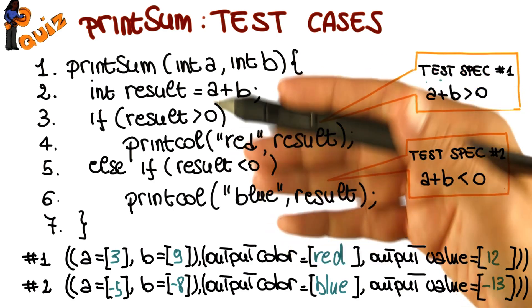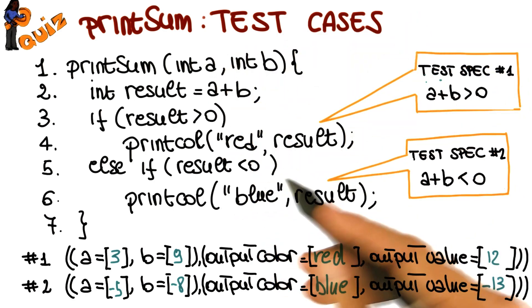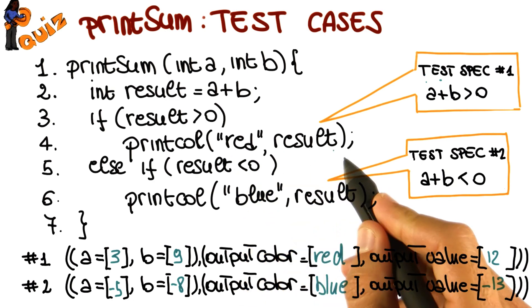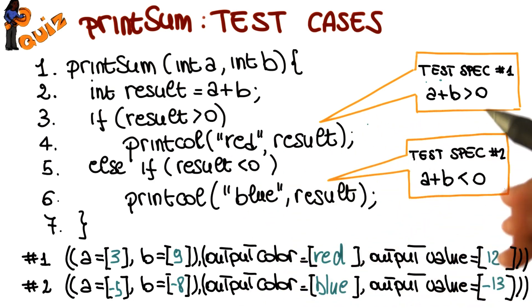So what we just saw is basically how we can go from a piece of code to a set of requirements, which are the interesting aspects of the code that we want to exercise. How we can satisfy the requirements by finding the right test specifications, and then how we can instantiate these test specifications into actual test cases.